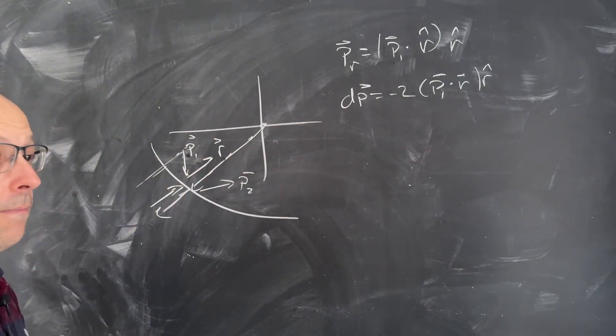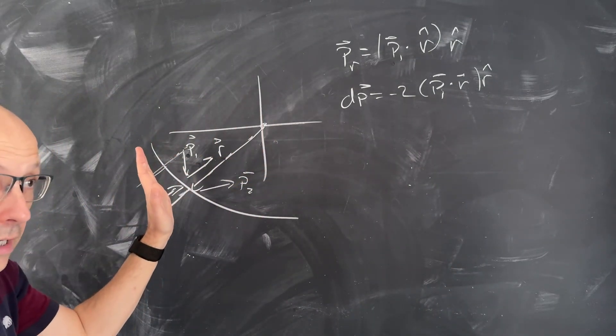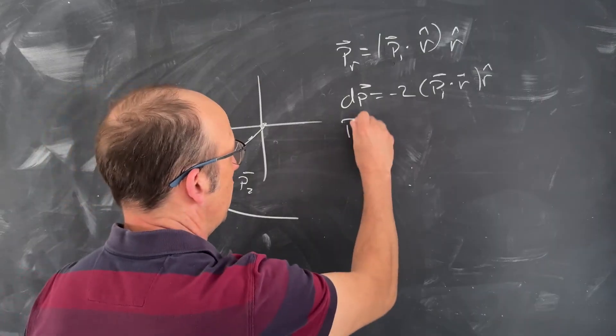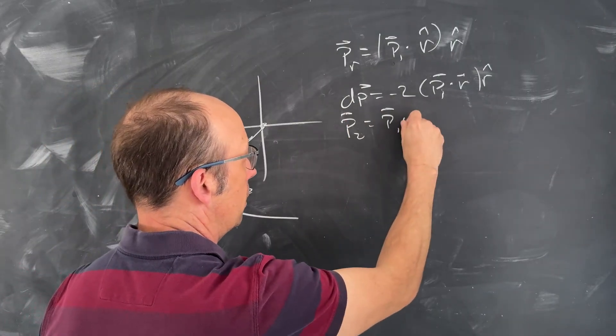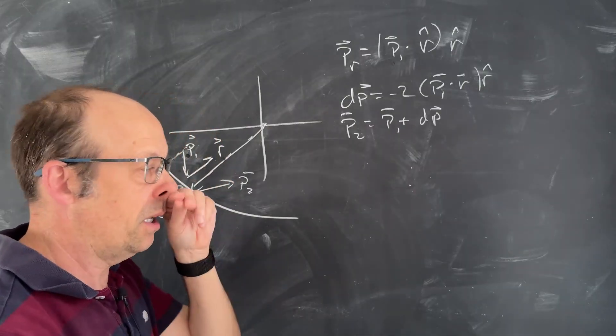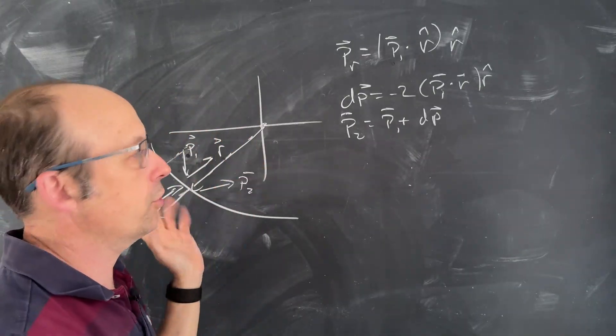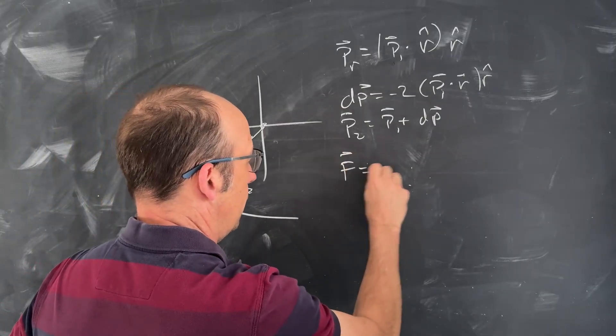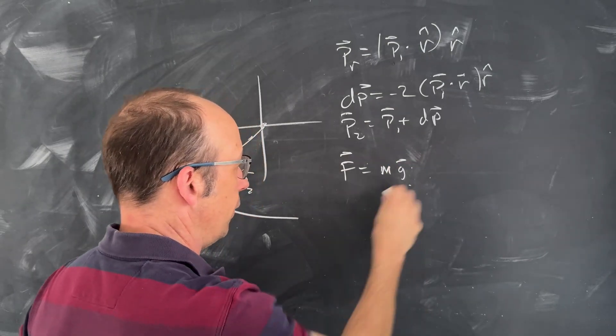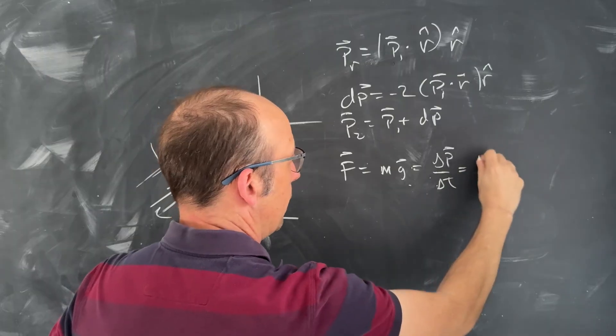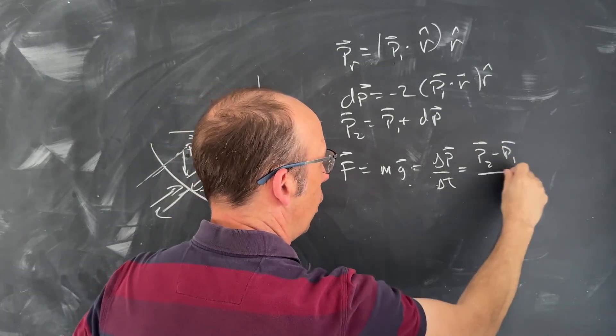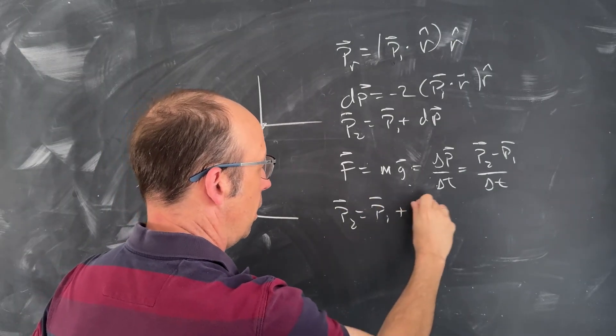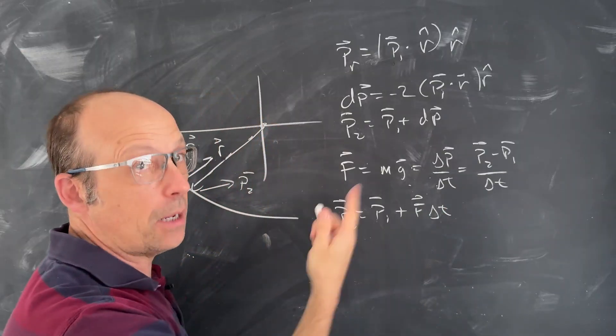So this is going to be equal to negative 2 p1 dot r hat r hat. So I can change the momentum of the ball during a collision. I just test if the ball gets to that value of r, flip that r component of momentum. And then I would just say p2 is p1 plus dp. And I think that will work. What about for the rest of the motion? For the rest of the motion, I'll just calculate the gravitational force and then just use the normal momentum update. So I'll say f is mg, where g is the gravitational vector, and that's the change in momentum with respect to time. That's p2 minus p1 over delta t, break it into a short time interval. And then I can find p2. p2 is p1 plus f delta t.